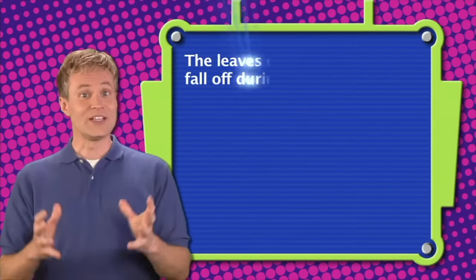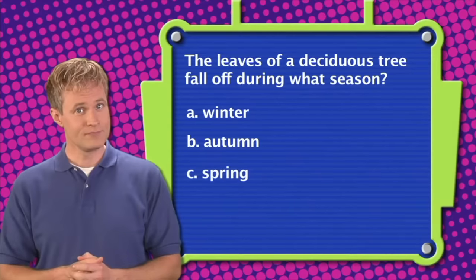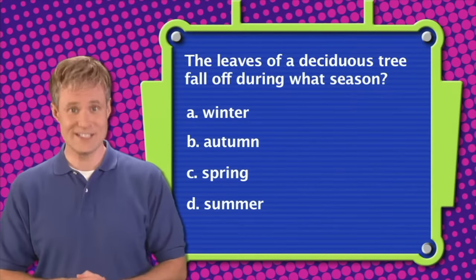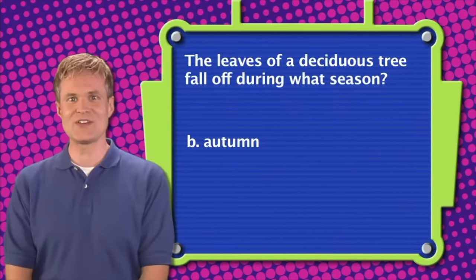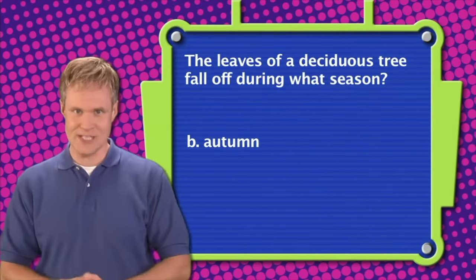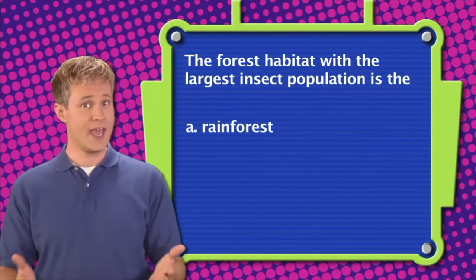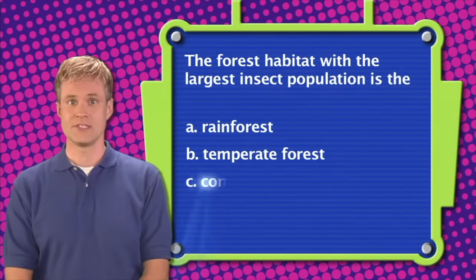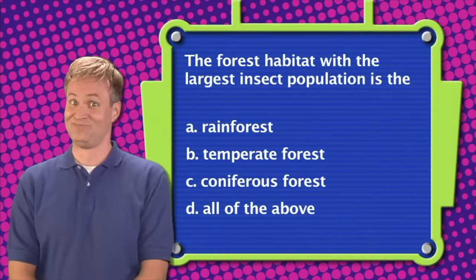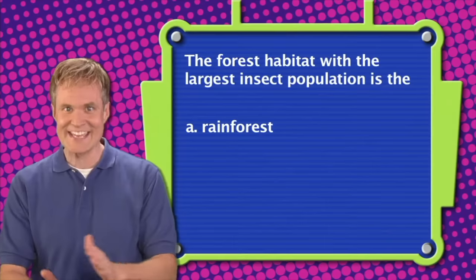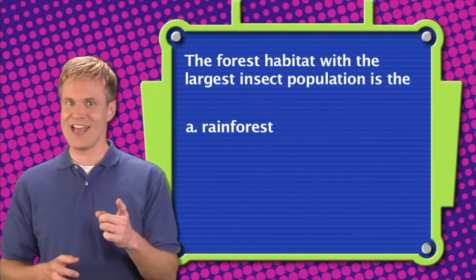Here's the next question. The leaves of a deciduous tree fall off during what season? A. Winter. B. Autumn. C. Spring. D. Summer. The correct answer is B — the leaves of a deciduous tree fall off during the autumn season. Final question: The forest habitat with the largest insect population is A. Rainforest, B. Temperate forest, C. Coniferous forest, or D. All of the above. The correct answer is A — the rainforest. Thank you for playing Forest Trivia.